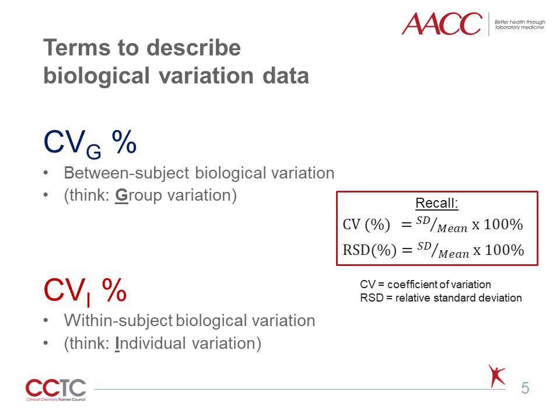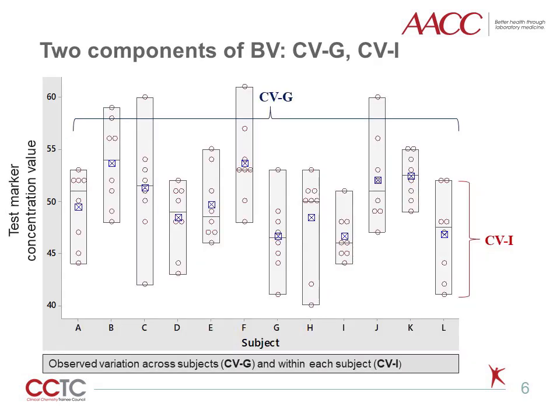There are two components of biological variation of importance. First, the between-subject component, CVG, which can be viewed as group variation. Second, the within-subject component, CVI, which can be viewed as individual variation. These terms and subscripts can vary across publications, although today the generally agreed-upon nomenclature is CVG and CVI. Biological variation, abbreviated BV throughout this presentation, includes CVG and CVI, which can be visualized in this figure.